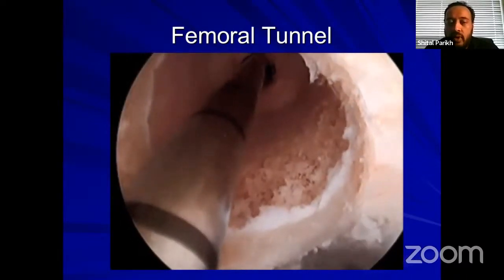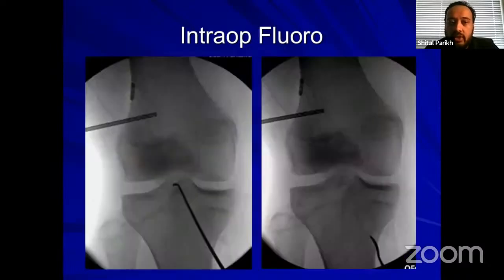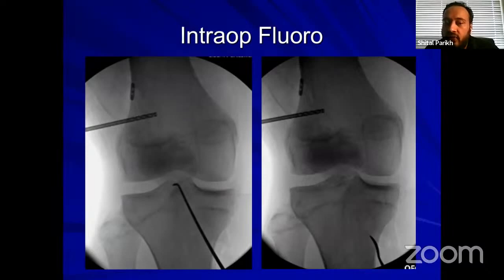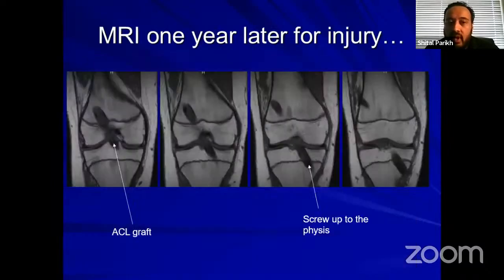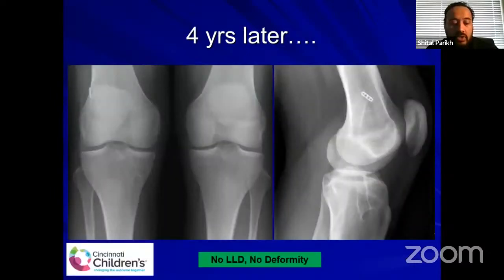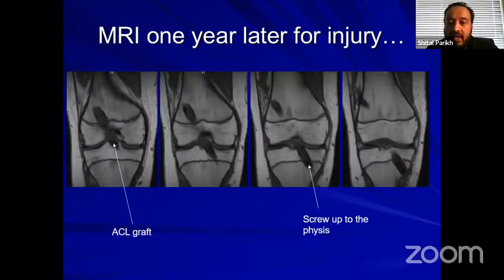The typical orientation uses suspensory fixation away from the physis on the femur. Here I'm measuring the length of the tibial tunnel, then we put the interference screw. This is an MRI of the same patient one year later showing the ACL graft, and you can see the screw is not violating the tibial physis — it is just up to the physis. You don't want to put a screw across the physis. At four years later, there is no limb length discrepancy and no deformity.